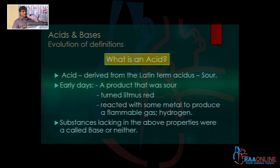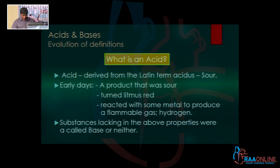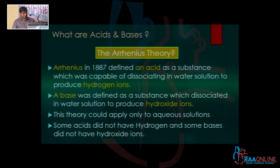This is how the early chemists defined what an acid was. If a substance did not have these properties, it was either a base or it was neither an acid nor a base. That is how the initial chemists defined what an acid was.